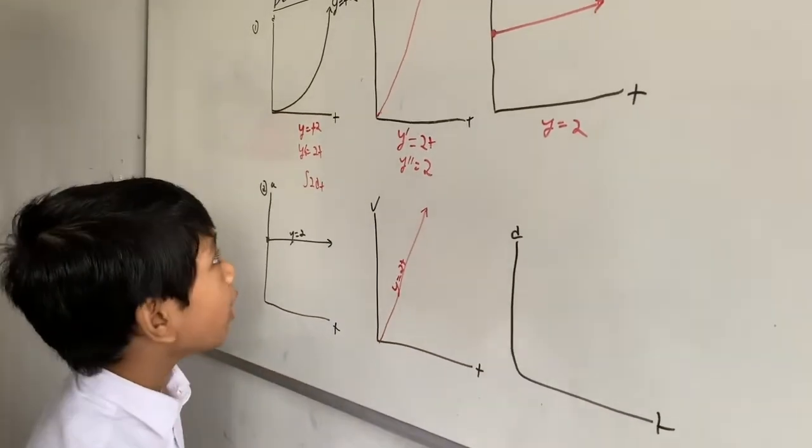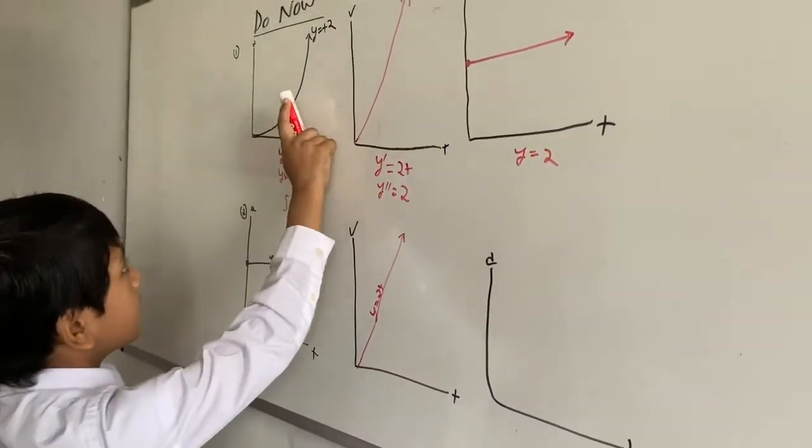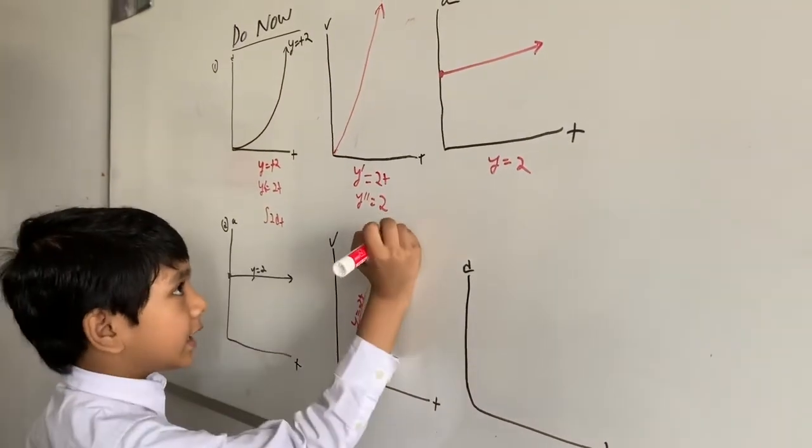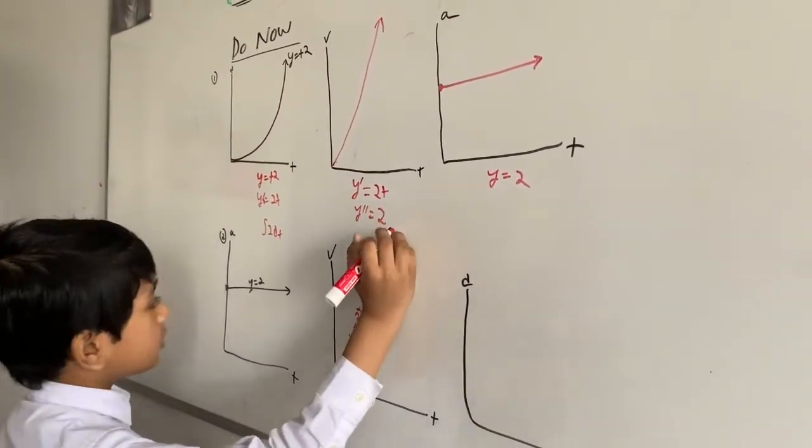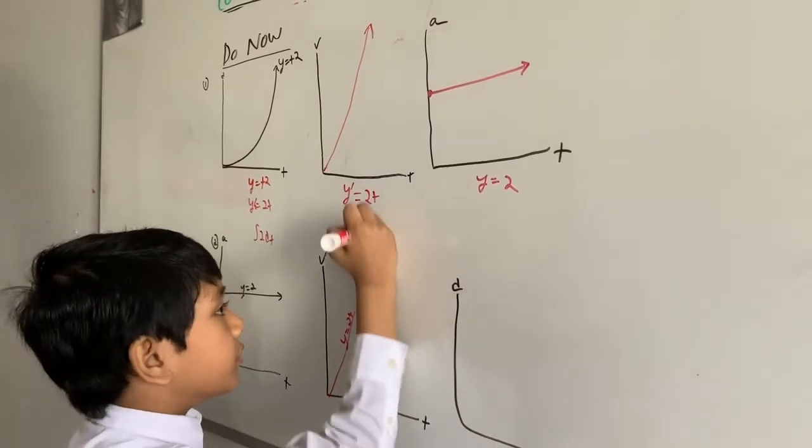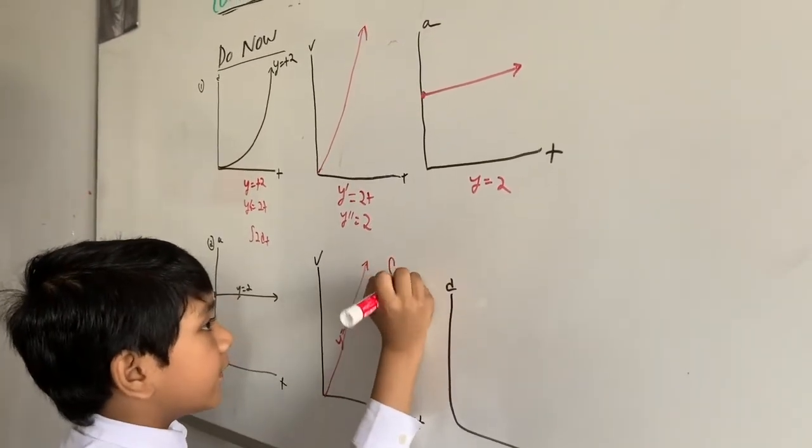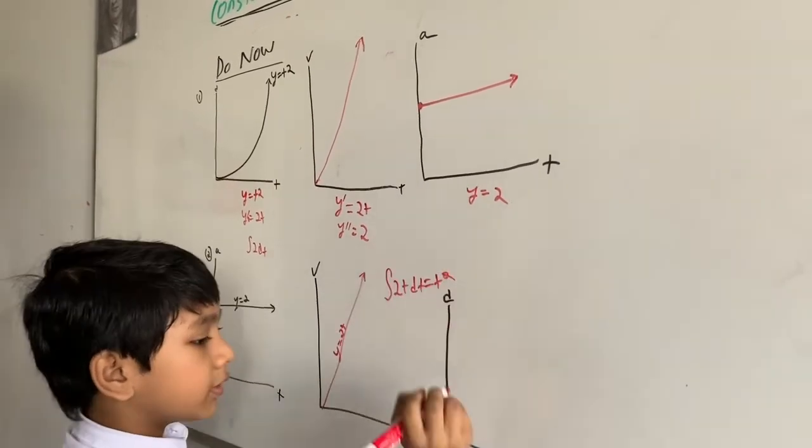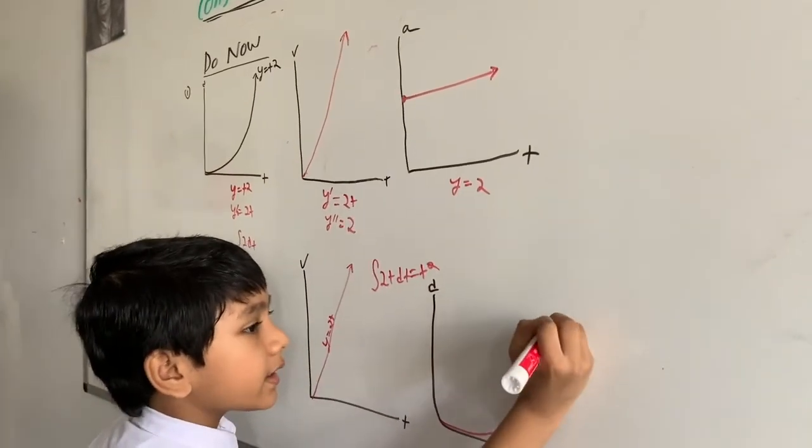Then you probably expect it to be y equal to t squared now. Well, say yes, because it is. The integral of 2t dt is t squared, which will look just like a parabola.